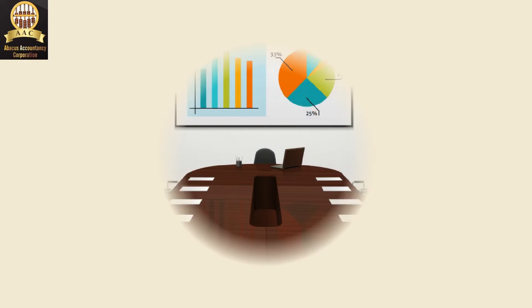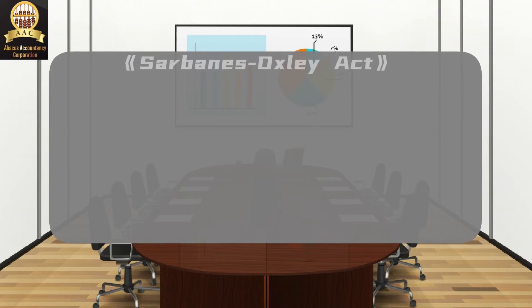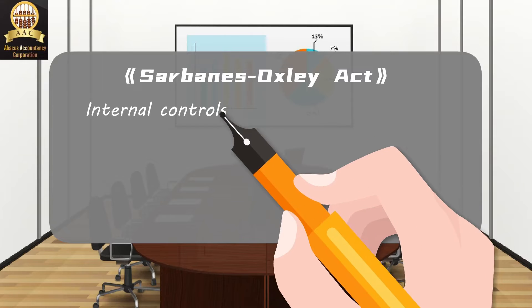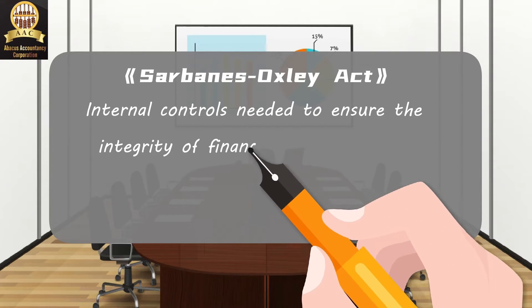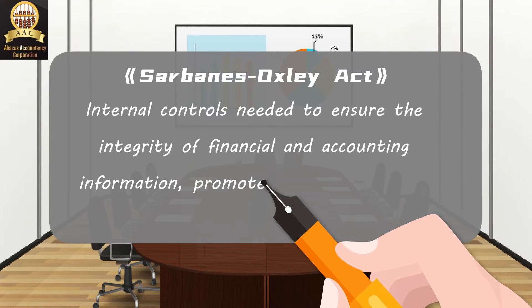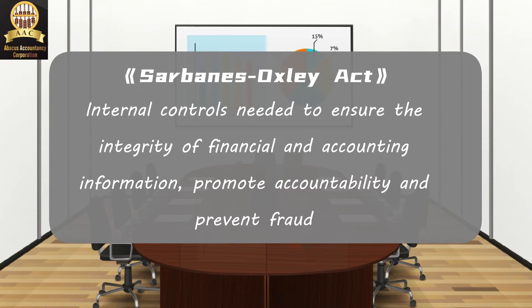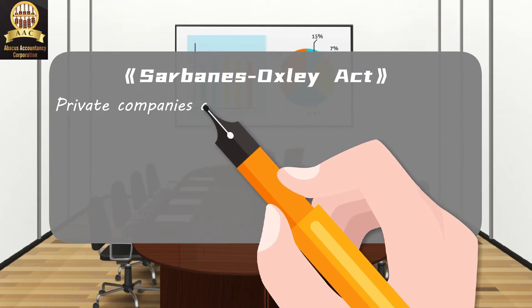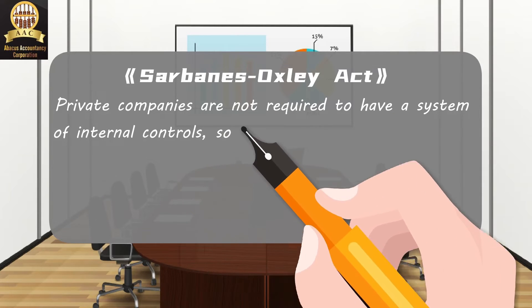The Sarbanes-Oxley Act of 2002 came in response to financial scandals involving publicly traded companies. One of the three major provisions of SOX is internal control, required to ensure the integrity of financial and accounting information, promote accountability, and prevent fraud. Unlike publicly traded companies, no requirement exists for private companies to establish a system of internal controls.